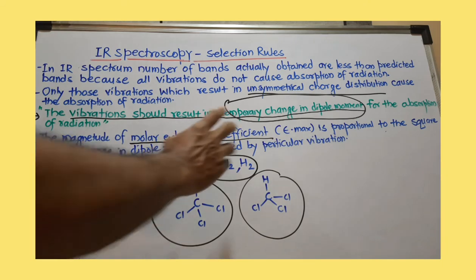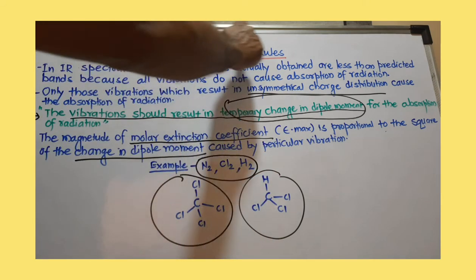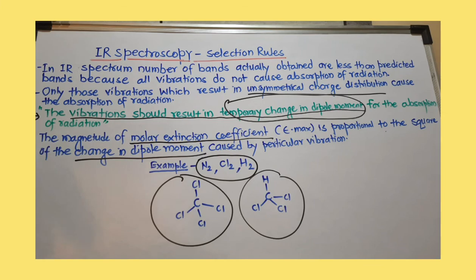Why is carbon tetrachloride IR inactive? Because there is no change in dipole moment. And that is what our selection rule says. This selection rule is very, very important to predict whether a molecule will show IR absorption or not.